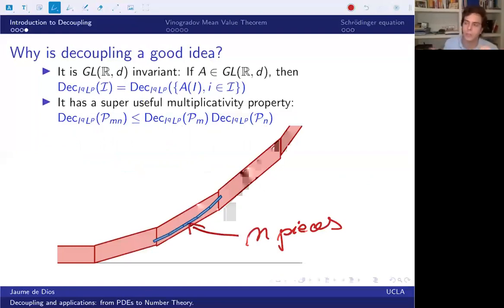And that, if you just repeated that for every single piece of the parabola, would give you m times n pieces. And by joining the two ways of the decoupling estimate you have, you would be able to get a new decoupling estimate. And that's basically how all the proofs work. You show the decoupling for some finite pieces, and then you just like zoom in, zoom in, zoom in, and like transfer your decoupling to arbitrary high values of n.